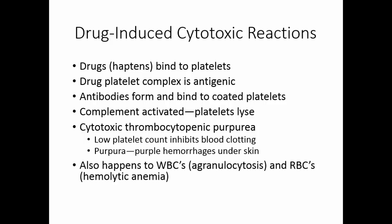This kind of drug-induced cytotoxic reaction can also happen to white blood cells, where you get agranulocytosis, and to red blood cells, where you get hemolytic anemia. The treatment is to stop taking the drug, and in severe cases, the patient may undergo plasmapheresis. In this treatment, the patient has their blood removed, their cells washed, and they get somebody else's plasma back so that the antibodies in their plasma are removed. It's a very long process — it takes several treatments — but it's usually successful.